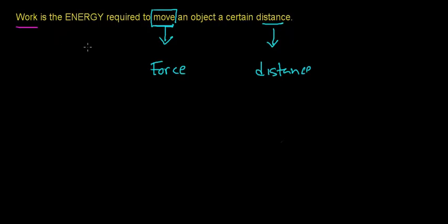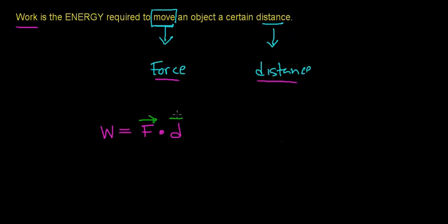We can relate the work required to move an object to the force and the distance over which that force acts. We often express this mathematically as work equals the force acting on an object times the distance over which that force acts. Keep in mind that both force and displacement are vector quantities, but when we multiply them we get a scalar quantity — work does not have direction, it just has magnitude.